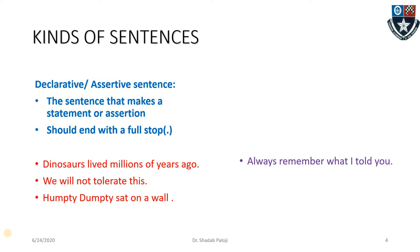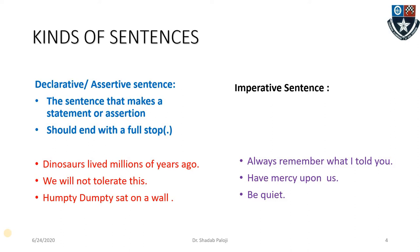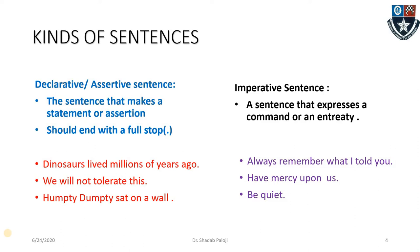Now let us look at more examples: 'Always remember what I told you,' 'Have mercy upon us,' 'Be quiet.' These are not declarative — they are imperative. The difference is that while declarative sentences assert something, imperative sentences express a command, an entreaty, or a request. Such a sentence is called an imperative sentence.